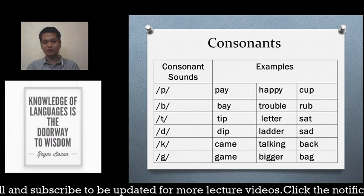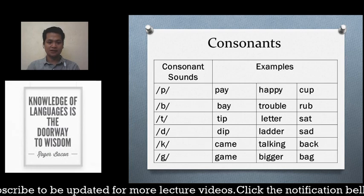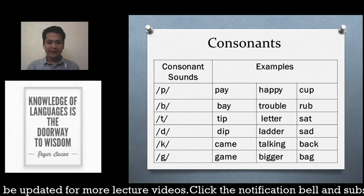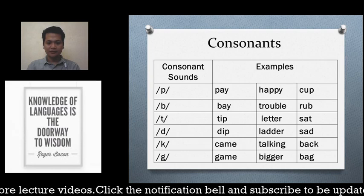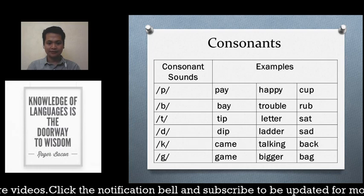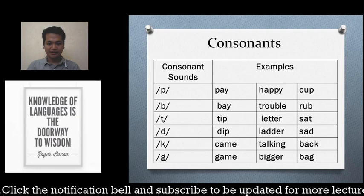Now for the consonant sounds. We have: /p/ — pay, happy, cup; /b/ — bay, trouble, rub; /t/ — tip, letter, sat — note there is a separate discussion on the American T sound; /d/ — deep, ladder, sad.